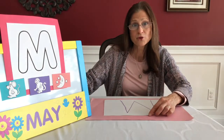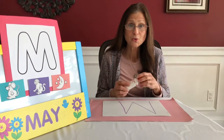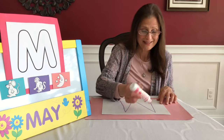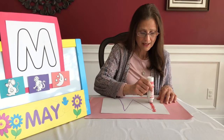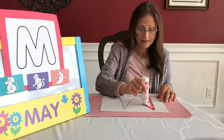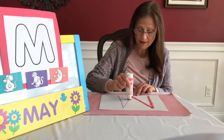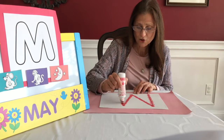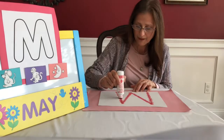Now, with your dot marker, I would like you to dot marker your letter M. Starting at the top, making our way all the way down to the bottom. Starting at the top, making our diagonal line, and following the diagonal line all the way back to the top, and a straight line back down to the bottom.